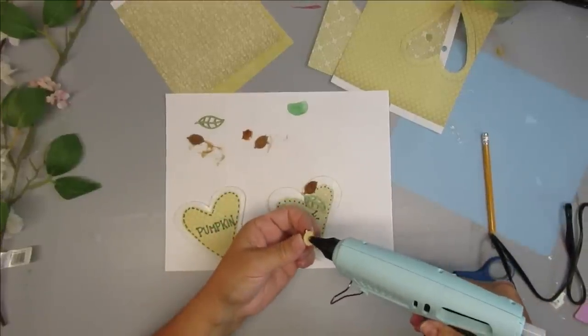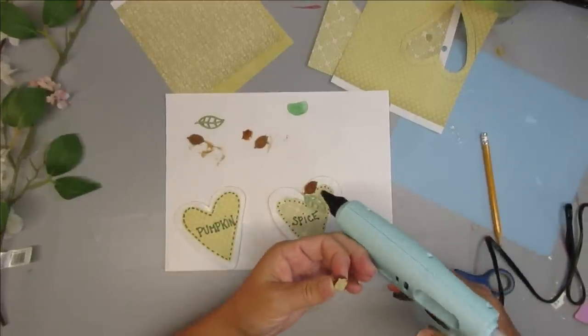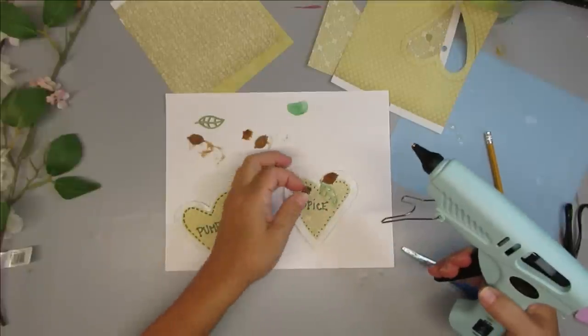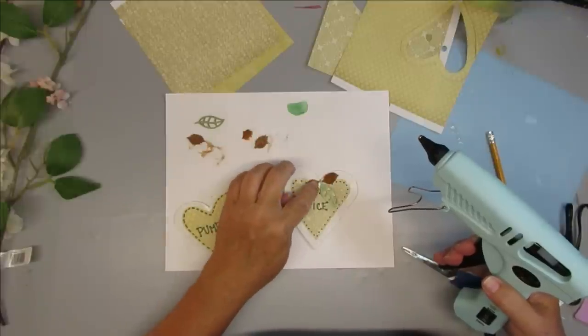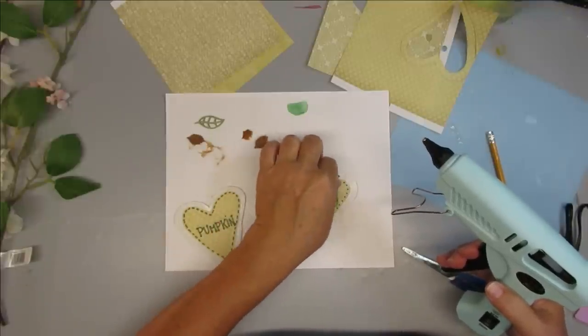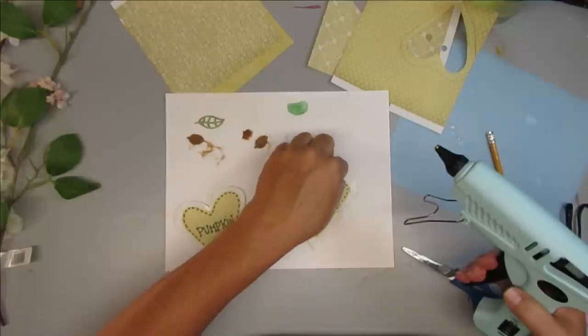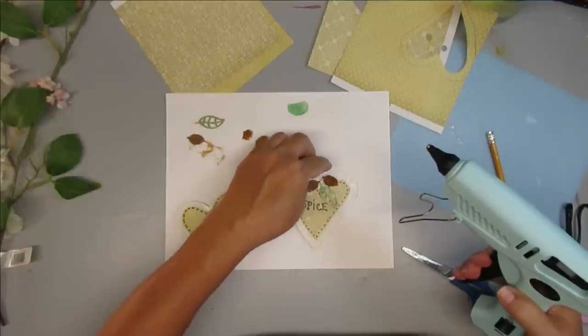Using the Magic Fly hot glue gun again, I'm going to add a little dab to each of the leaves and place those on the top of the hearts. I have the green one in the center here and then the two brown ones will be at the top and then I'll do something a little bit different for the other one.